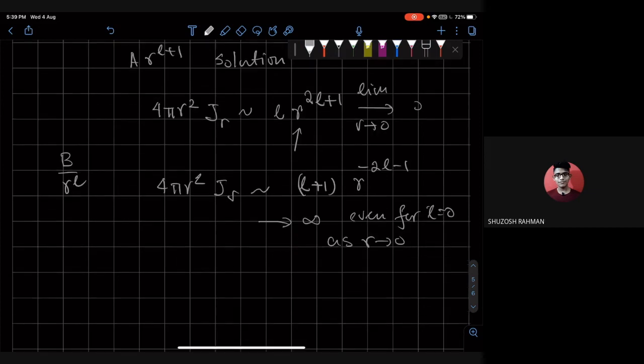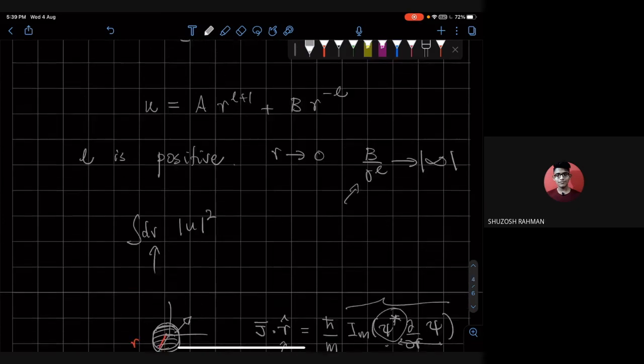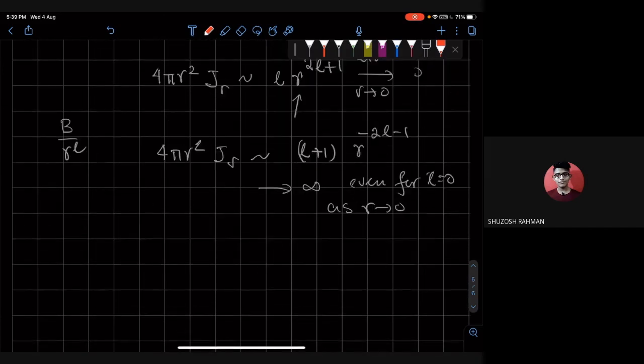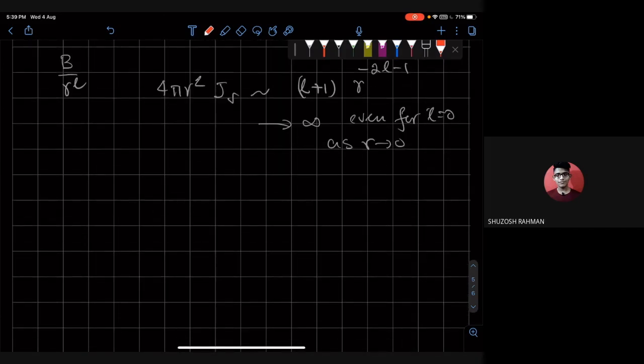So this means that if I take the second solution, the amount of probability current coming out of the origin is infinite, which is not a physical result. So this means that for quantum mechanics to be valid, we have to set B close to 0. In pure mathematical terms, of course, B non-zero is a solution to the differential equation, but quantum mechanics is not just solving differential equations. Quantum mechanics is solving differential equations with very important boundary conditions.